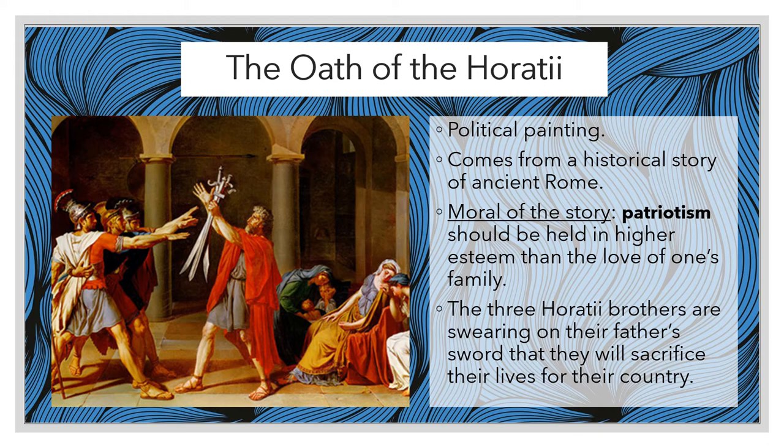The first artwork from David is called The Oath of the Horatii. This artwork is very obviously a political painting, as we can see from the patriotic symbols — the swords, the war attire, the helmets, all of the weapons, and the robes they are wearing. The story was based on an ancient Roman story and the moral is patriotism. David wanted to show that your honor and patriotism must be higher than your emotions and your love for certain things — like, for instance, your family.